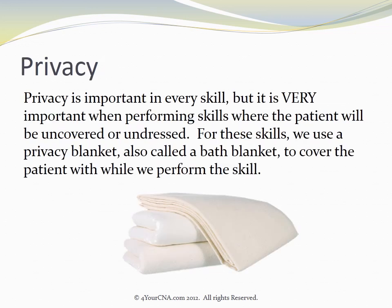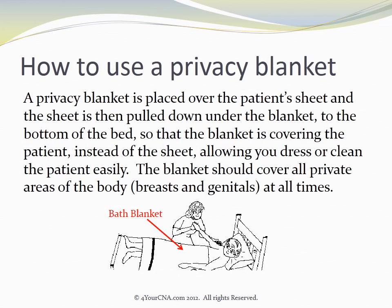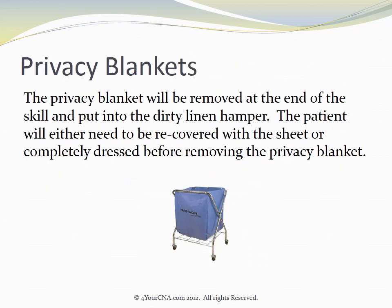Privacy is important in every skill, but it is very important when performing skills where the patient will be uncovered or undressed. For these skills, we use a privacy blanket, also called a bath blanket, to cover the patient while we perform the skill. A privacy blanket is placed over the patient's sheet and the sheet is then pulled down under the blanket to the bottom of the bed, so the blanket is covering the patient instead of the sheet, allowing you to dress or clean the patient easily. The blanket should cover all private areas of the body, such as the breasts and genitals, at all times. The privacy blanket will be removed at the end of the skill and put into the dirty linen hamper. The patient will either need to be recovered with the sheet or completely dressed before removing the privacy blanket.